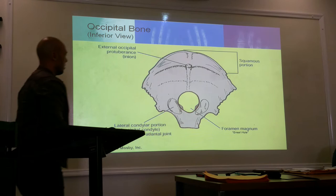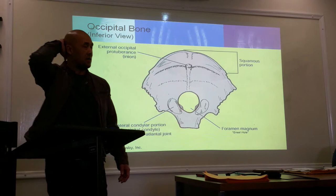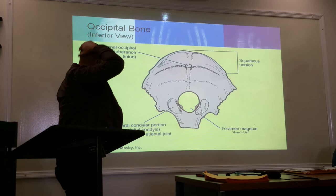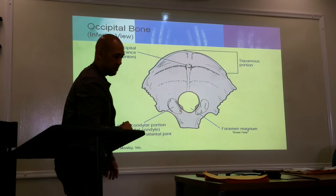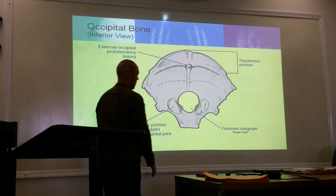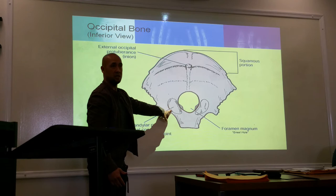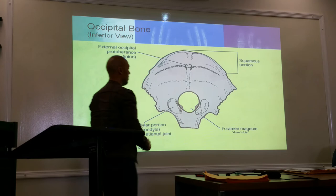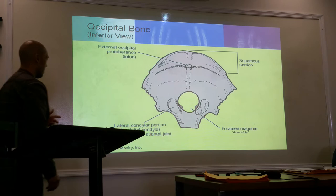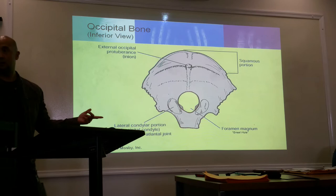On the occipital bone, the squamous portion is the flat back of your head. Running your hand down the back of your head, you'll feel that bony protrusion known as the inion or occipital protuberance. At the very bottom is a smooth surface where C1 articulates with the base of the skull. In the inferior portion is a large opening called the foramen magnum, through which the spinal cord passes.